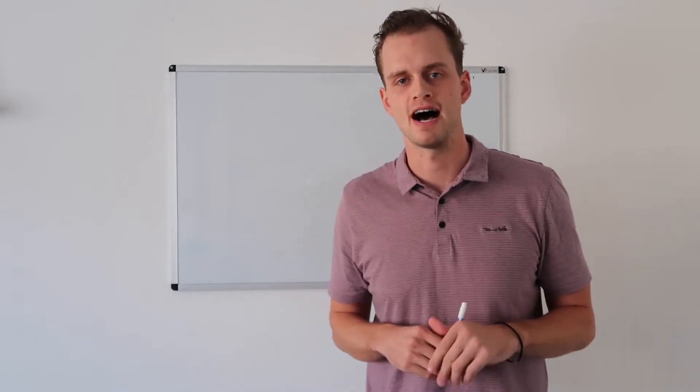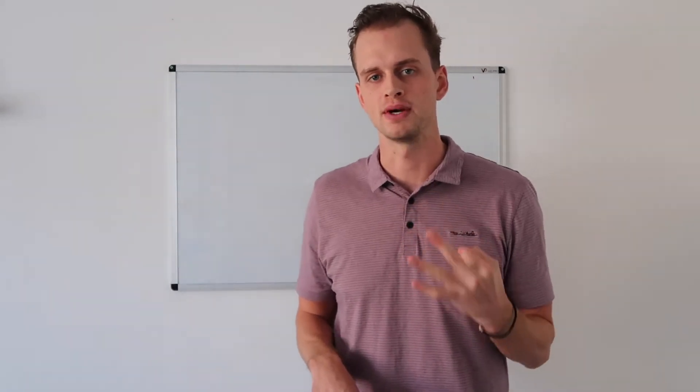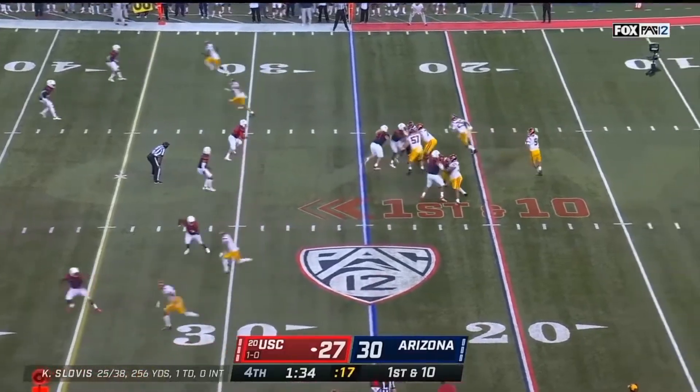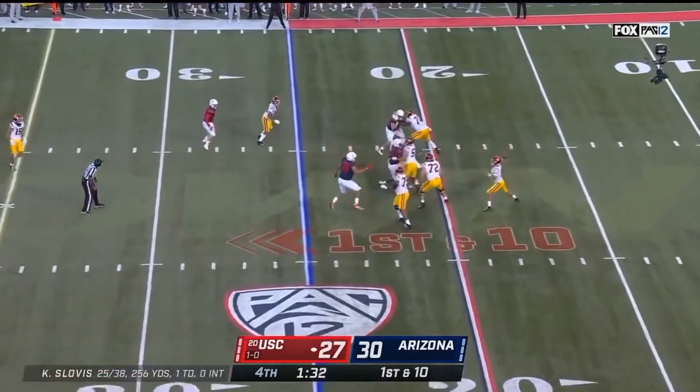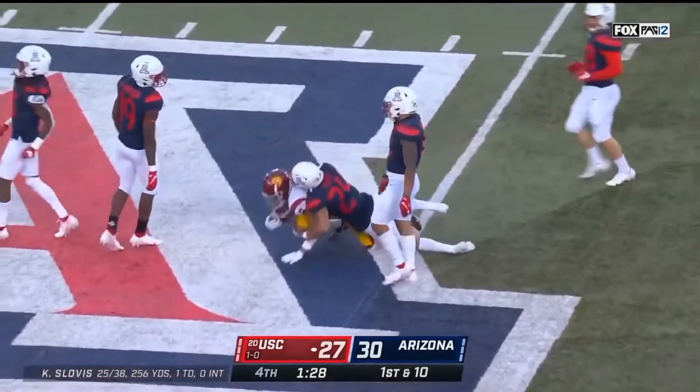Alright so the drive starts, one minute 35 left in the game. You're starting on your own 25 yard line. You have all three timeouts. Let's check out how the drive starts here. Here's Slovis, over the middle, nice throw, Amon Ra St. Brown.